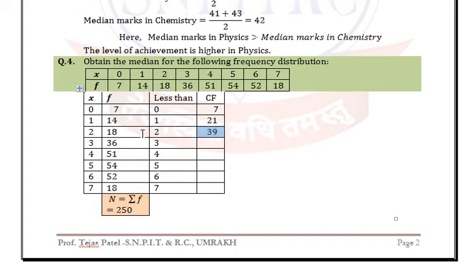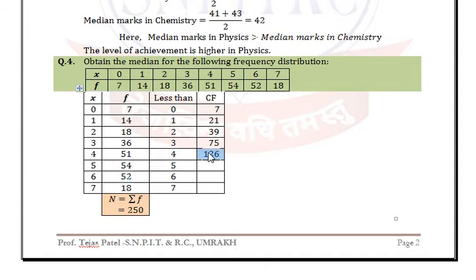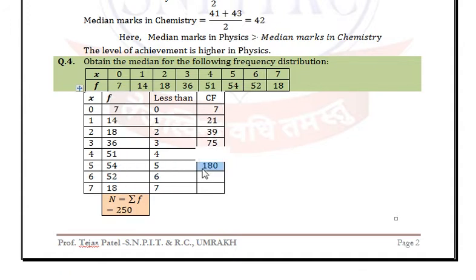Continuing: 39 + 36 = 75, then 75 + 51 = 126, then 126 + 54 = 180, then 180 + 52 = 232, and finally 232 + 18 = 250.